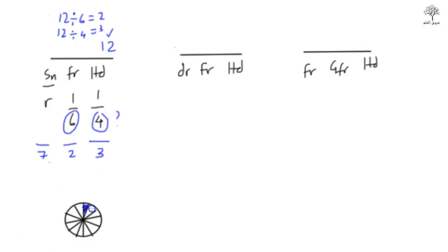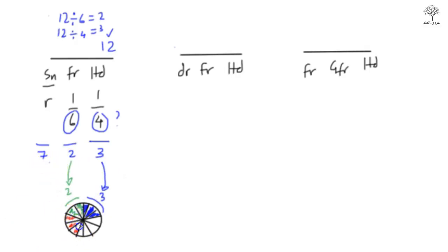Let's do it the cake style: 12 pieces in our cake this time. We give 3 pieces to the husband, 2 pieces to the father — that's 1 sixth of 12. Count what's left: 1, 2, 3, 4, 5, 6, 7. So 7 pieces go to the son.